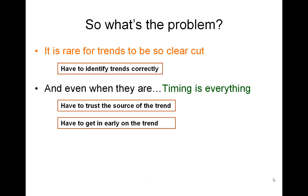Even when we are able to identify trends correctly, timing is everything — this is very key. First, we have to trust the source of the trend wherever we got it from. A lot of sites will provide this trend for you in the trading platform itself, but we have to be very sure that the trend is fresh and still ongoing. We also have to be sure that the trend is represented accurately by whoever is providing the trading platform to us.